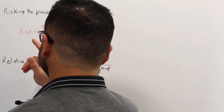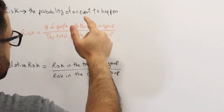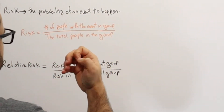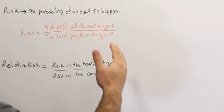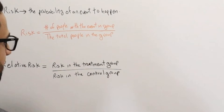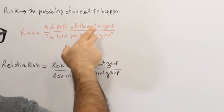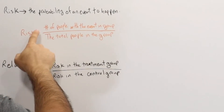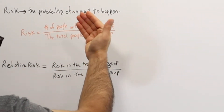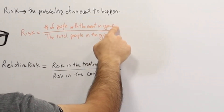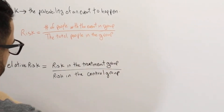Risk is basically the probability of an event, and that event could be a side effect or a condition that the medication is causing — something the researchers are looking at. The equation for risk is the number of people with an event over the total number of people in that same group.